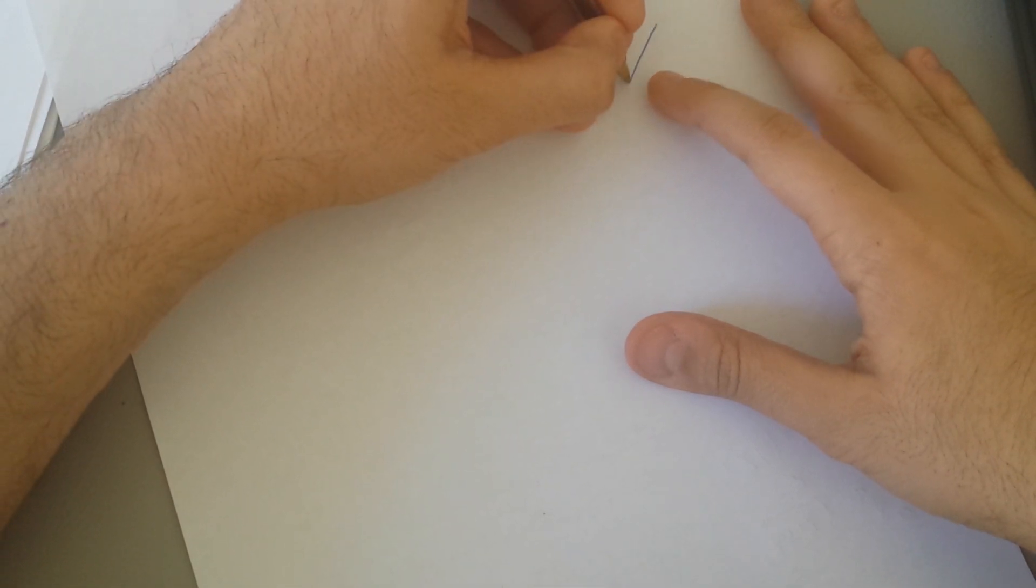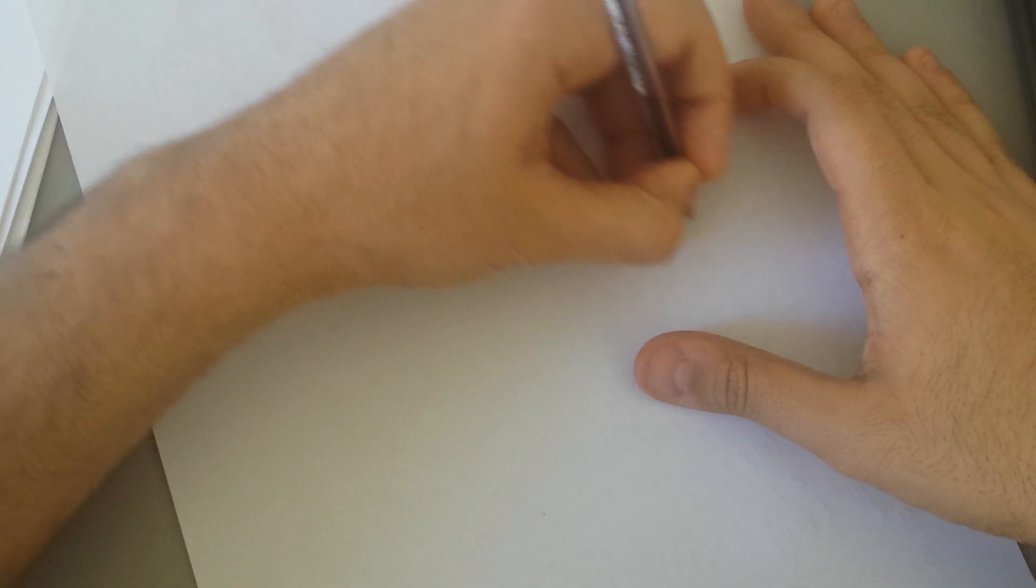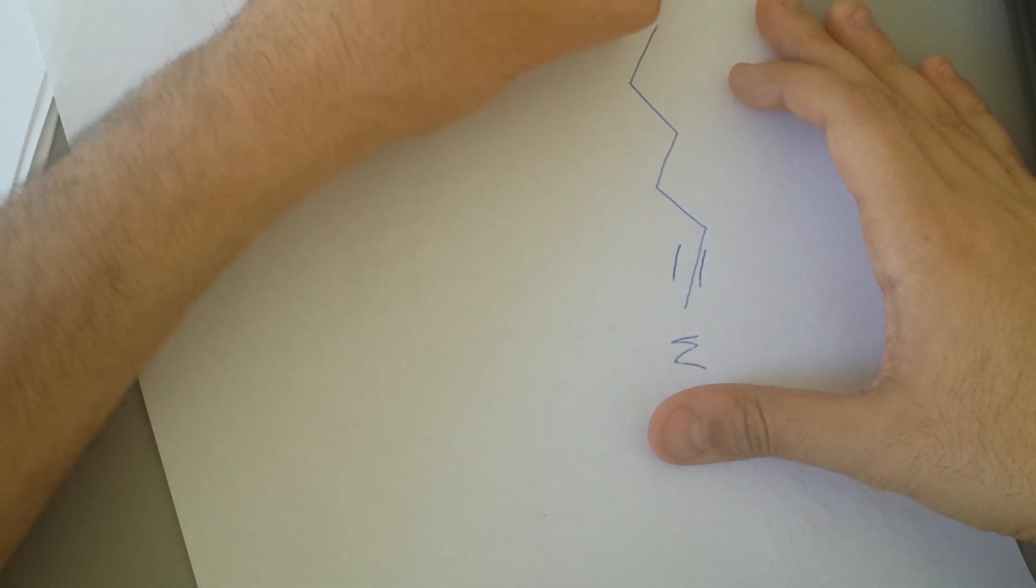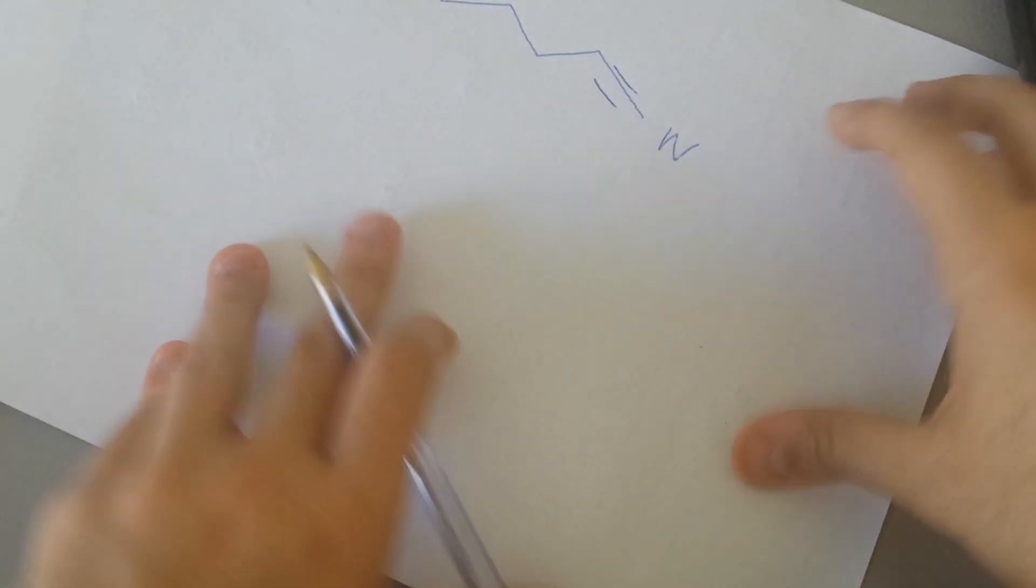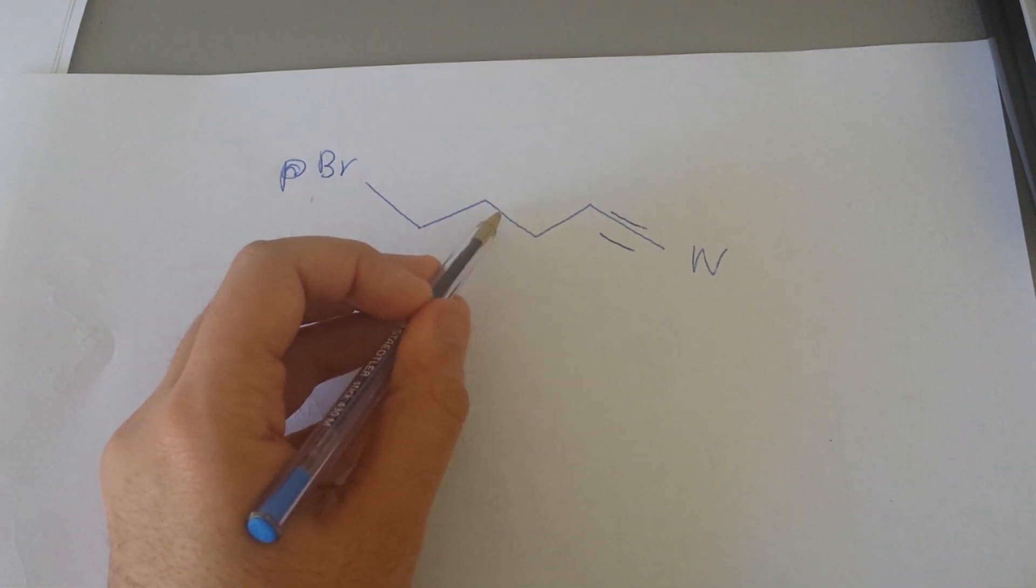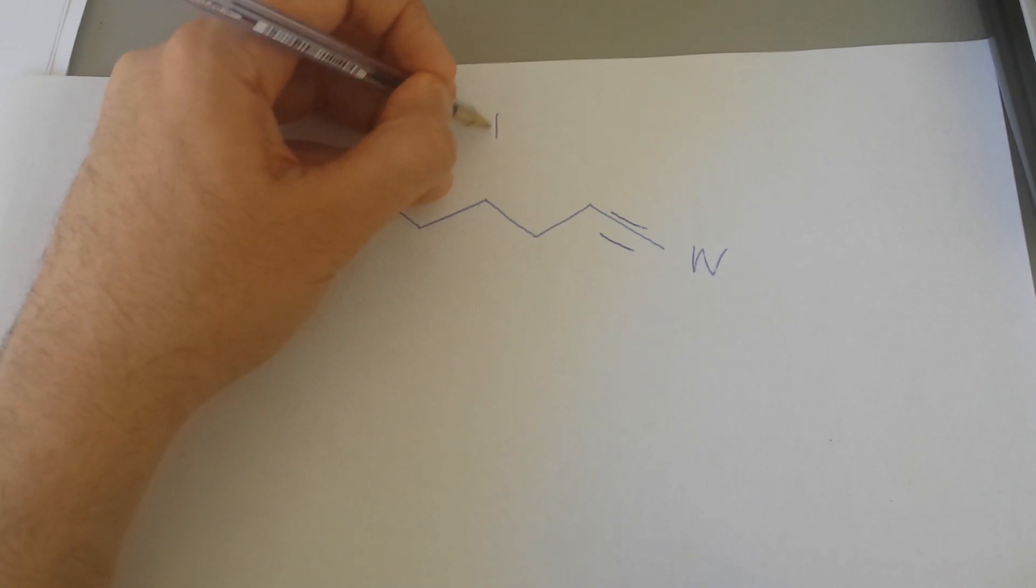There you go. You can see. We have our Br here. This is the one that has pentet in it. This was the one that was like that.